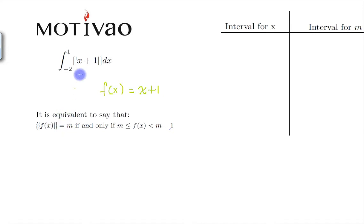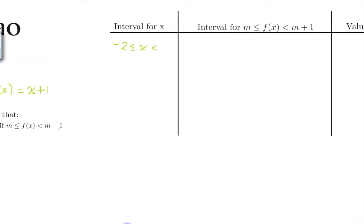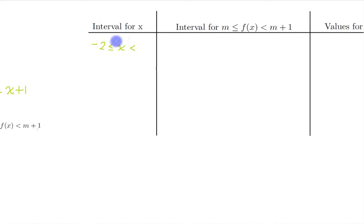Our values in x are dependent on the limits of integration, so we know by limits of integration we have to start from minus 2 to x less than something. Now before I have that something, I need to make sure that this interval will give me an integer in this interval. What is the function? It's x plus 1.